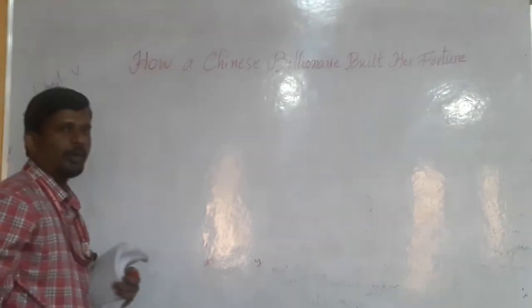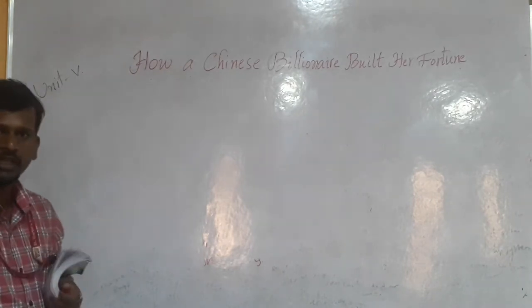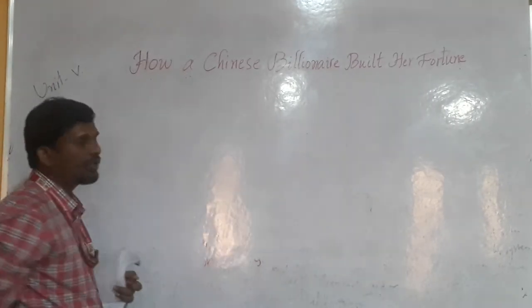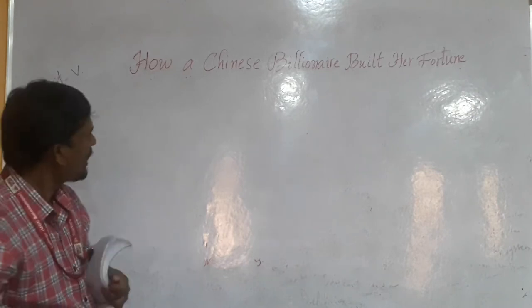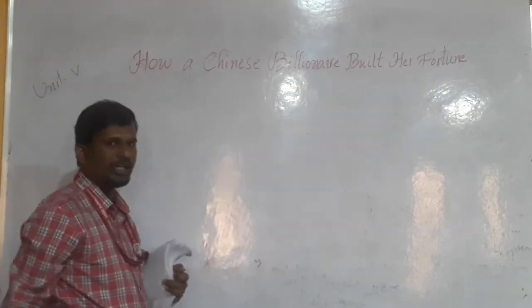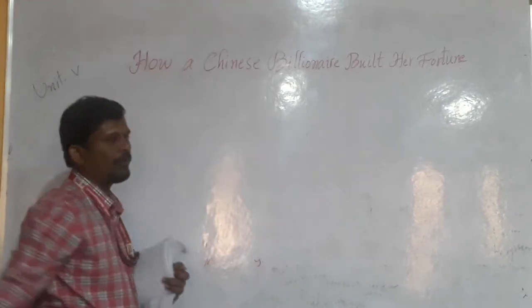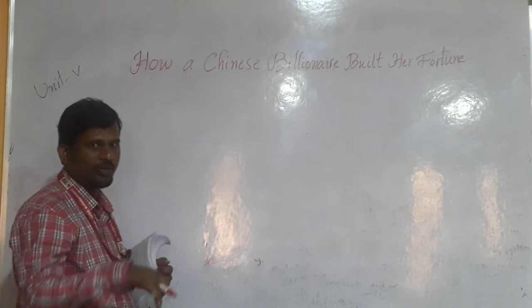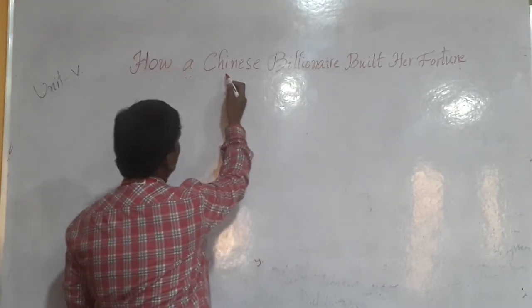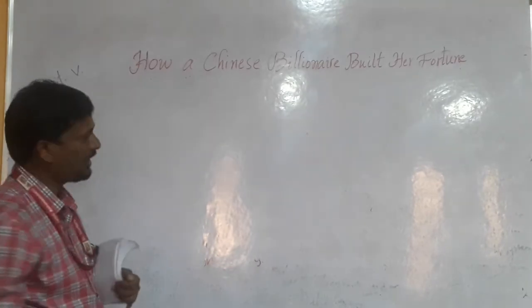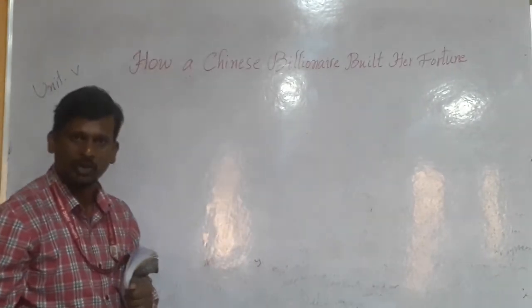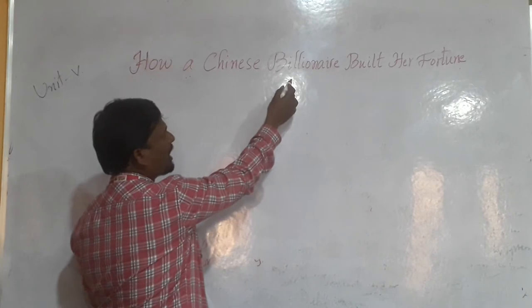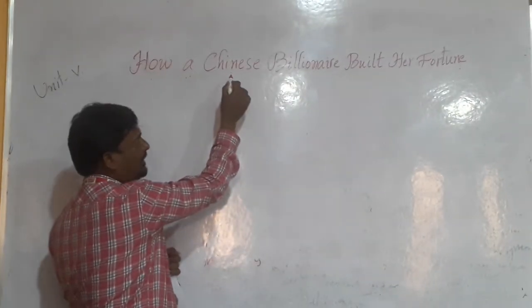The title is How a Chinese Billionaire Built Her Fortune. Here we have to see the parts of speech. See, mostly all are in capital letters only, all the words started with capital letters, except article A. How is an interrogative pronoun and also sometimes it works as adverb. A is an article, used before countable nouns. Chinese - China is a proper noun, but here Chinese means adjective, Chinese Billionaire.